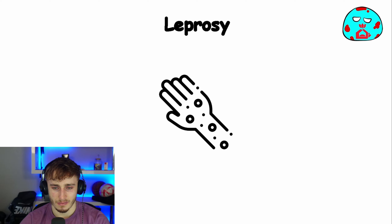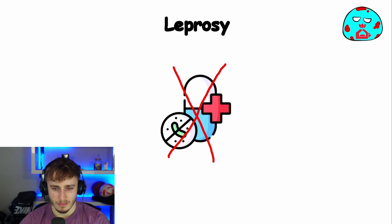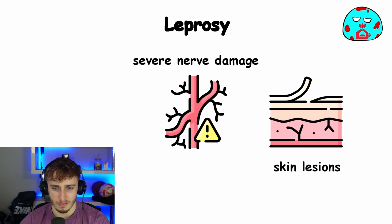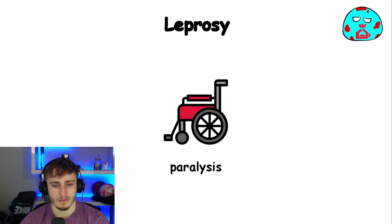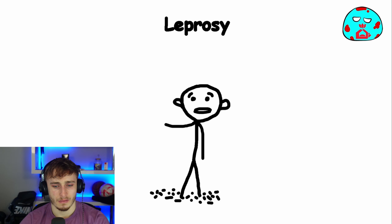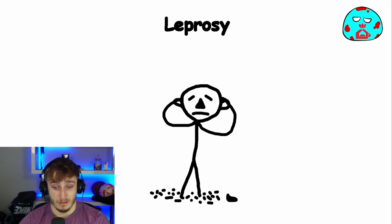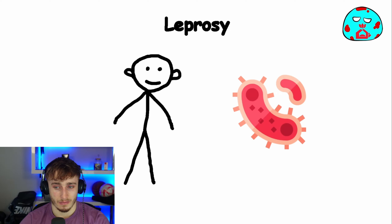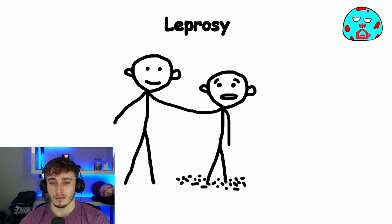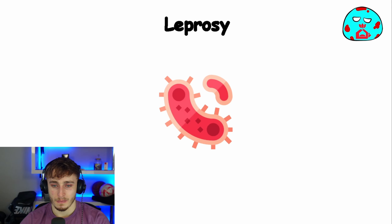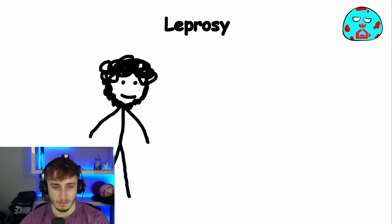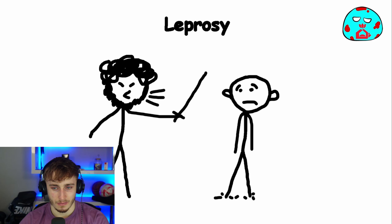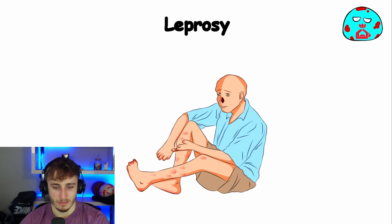Leprosy. Leprosy, caused by a bacterium called mycobacterium leprae, often starts with pale or reddish patches on the skin that are numb to the touch. If left untreated it can cause severe nerve damage, skin lesions, muscle weakness, and paralysis. Over time your fingers, toes, and nose would begin to fall off, leaving you disfigured permanently. However, contrary to what most believe, leprosy is only transmitted through prolonged close contact with an untreated person and is not highly contagious. In the past, people with leprosy were shunned from society and forced to live in colonies with other sick people as people were scared to catch it. Malaria — I get it, in those times that's the only way you could really avoid it.